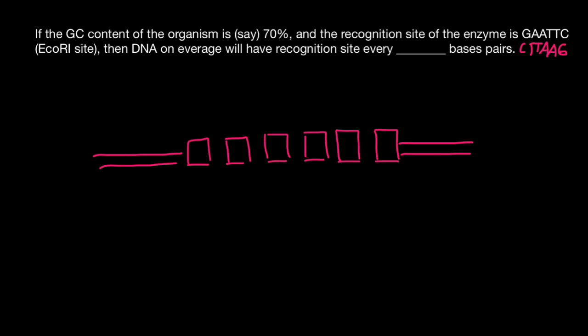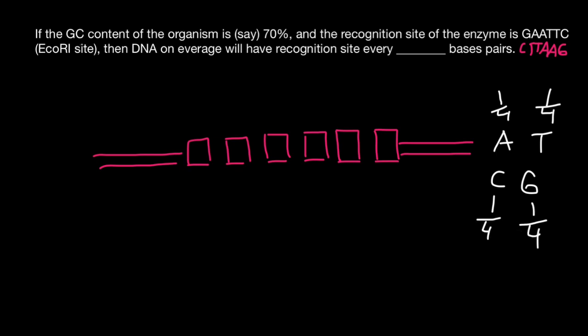Now imagine that we have an unlimited supply of adenine, thymine, cytosine, and guanine — not just four bases total, but an unlimited supply of each base. We expect that each base makes up one quarter of the total, because we have four bases.